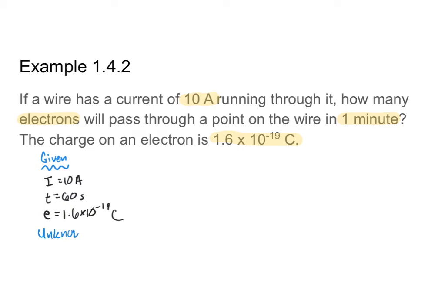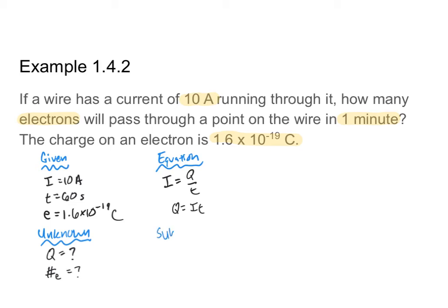My unknowns: first I need to find charge — how much charge is traveling through that point in one minute — and then I need to find how many electrons are moving to generate that charge. I'll use i equals q over t to solve for q, so q equals i times t. Substituting: q equals 10 times 60, so q equals 600 coulombs.